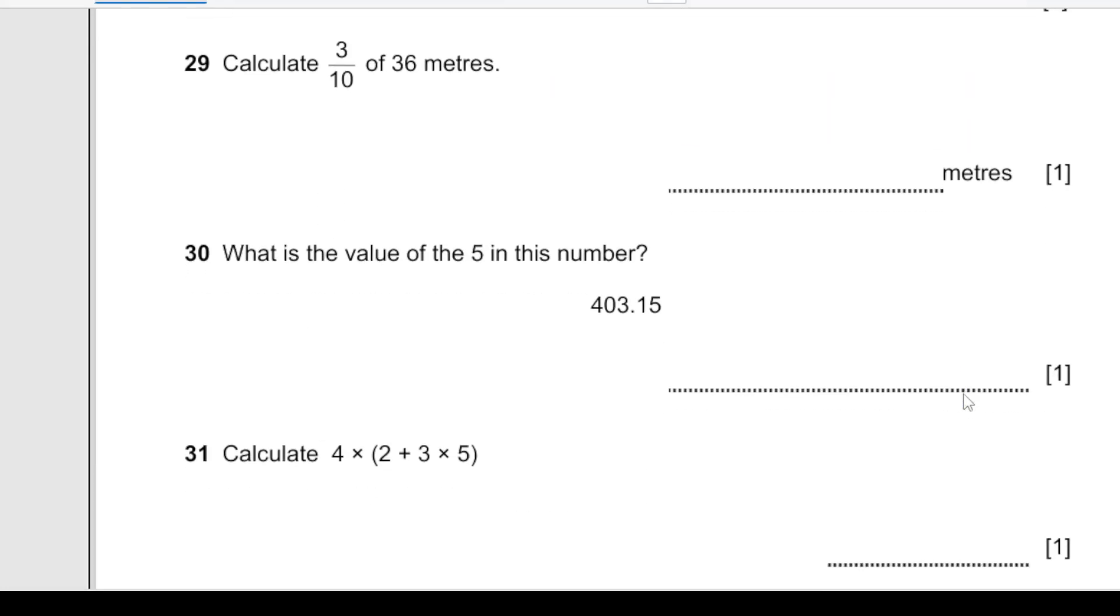Calculate 3/10 of 36 meters. 3 over 10 times 36. This is 36 divided by 10 times 3: 6 times 3 is 18, and 3 times 3 is 9, over 10 - that is 10.8. The final answer is 10.8 meters.